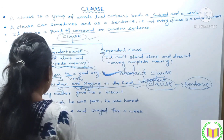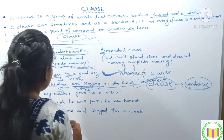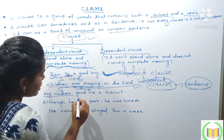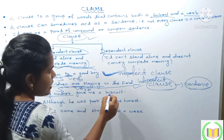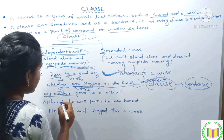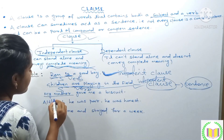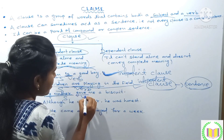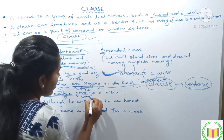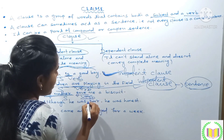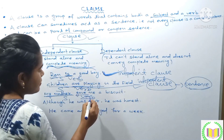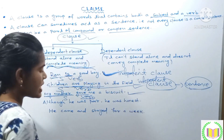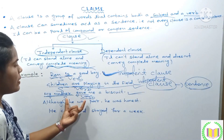Next, the third example: 'My mother gave me a biscuit.' Here, 'my mother' is the subject, 'gave' is the verb. It makes complete sense, so we call it a sentence and we also call it a clause — specifically, an independent clause.